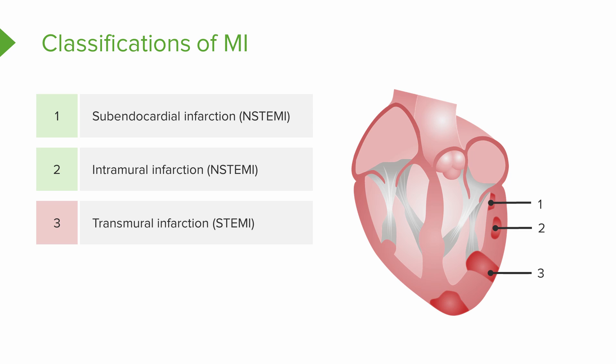We've got this picture here to help you understand how these all interact. Number four is another non-STEMI, so one, two, and four are non-STEMIs. This is a subepicardial infarction. This slide is worth coming back to and reviewing, because you'll hear these words used in real practice all the time, and you want to be able to picture what each term means and gauge the severity of the patient's heart wall damage.